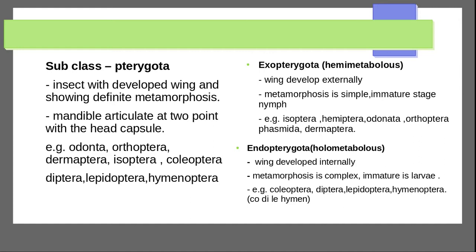Endopterygota, or Holometabola, are insects where wings develop internally and metamorphosis is complex. The life cycle includes egg, larva, pupa, and adult stages — this is complete metamorphosis. Key orders include Coleoptera, Diptera, Lepidoptera, and Hymenoptera. A shortcut to remember: Co-Di-Le-Hymen.